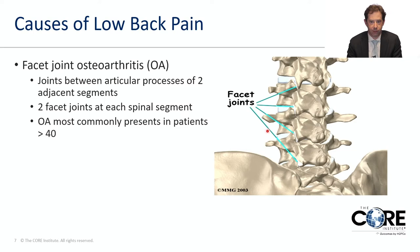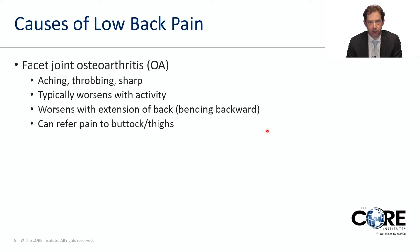The facet joints are little joints which basically connect each level of the spine, formed by the levels above and below. We see arthritis in the facet joints most commonly in patients greater than 40, but there are varying degrees of arthritis and you can see it at any age. This may manifest as an aching, throbbing, or sharp pain, which worsens with activity, specifically when patients extend their back or bend backward to the side. The pain can refer to the buttocks and thighs.